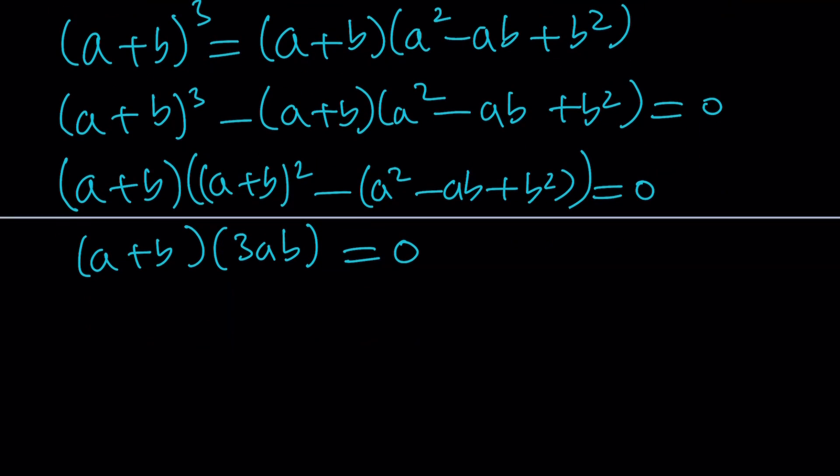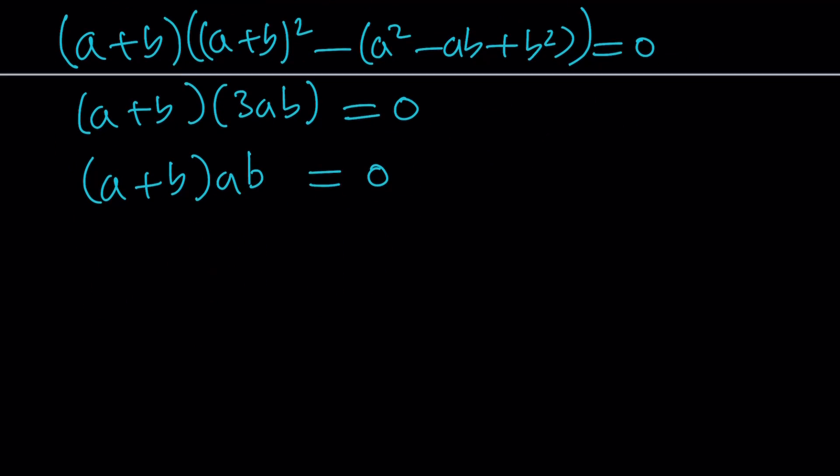And then from here, we can divide both sides by 3. And this gives us two things. Either a plus b is 0 or ab is 0. If a plus b is 0, we can write this in different ways, like b equals negative a or a equals negative b. We can also write this as an ordered pair, a comma negative a. So two numbers that are opposites will actually work.